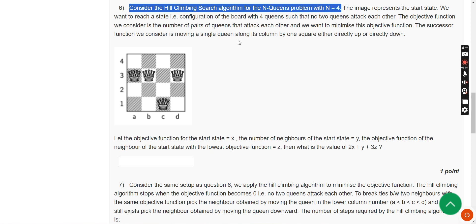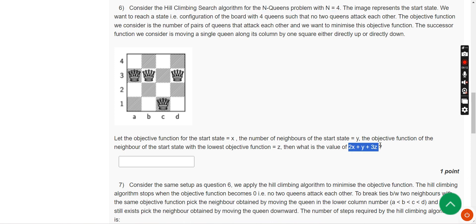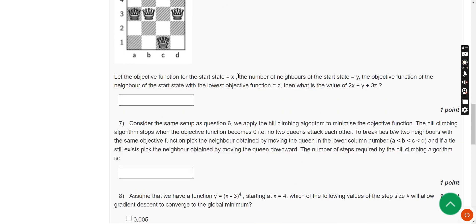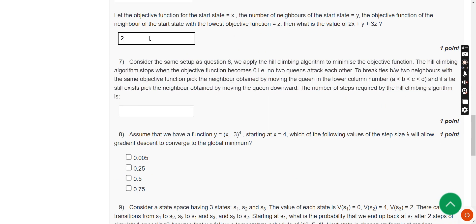Now let's move on to the sixth question. Consider a hill climbing search algorithm for the n-queens problem with n equals 4. What is the value of 2X plus Y plus 3Z? For the sixth question I have got the answer as 24.